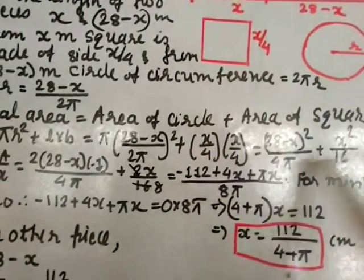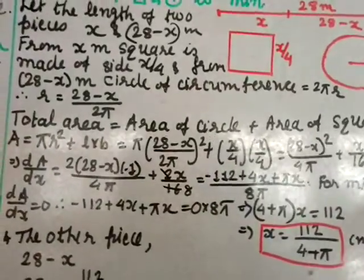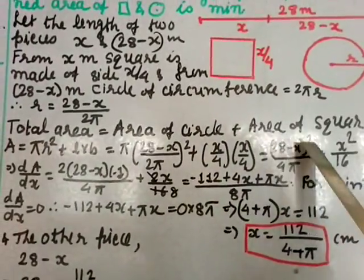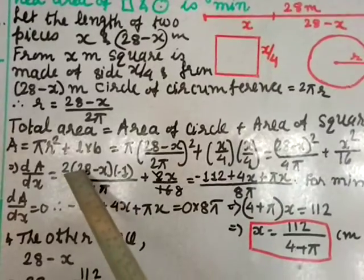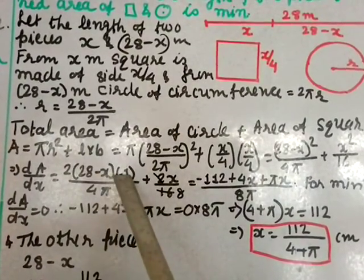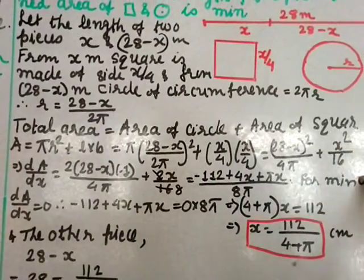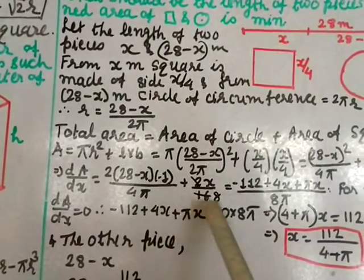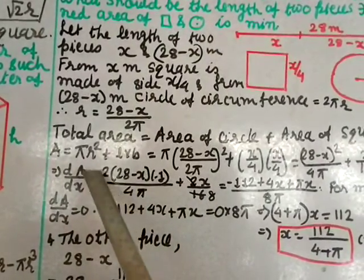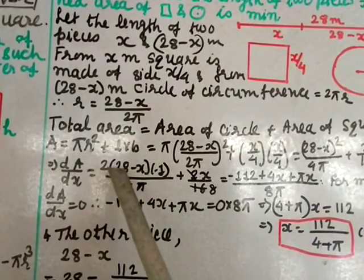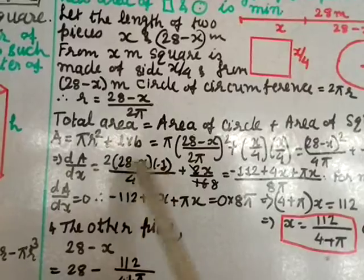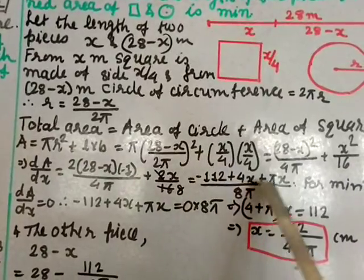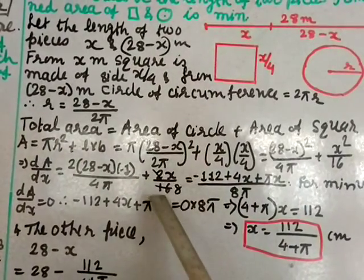Substituting r = (28 minus x)/(2π): A = π times [(28 minus x)/(2π)] squared + x squared/16 = (28 minus x) squared/(4π) + x squared/16. Differentiating with respect to x: dA/dx = 2(28 minus x) times (minus 1)/(4π) + 2x/16, which simplifies to (minus 112 + 4x + πx) divided by 8π.